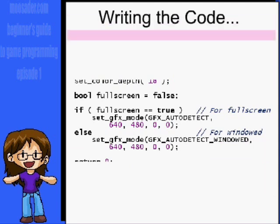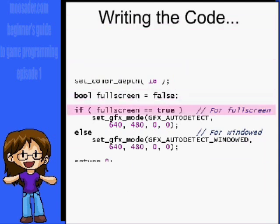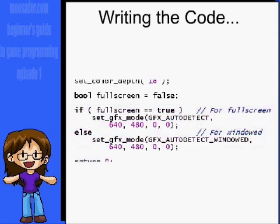Usually, I'll make a fullscreen boolean and initialize it. Then have an if statement to set up the window as either fullscreen or windowed, depending on what it's initialized to. You can also have a function to toggle fullscreen mode that does the same thing.